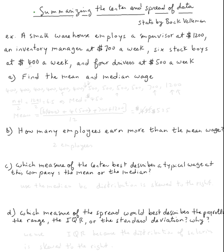For question a, we need to find the mean and median wage. First we start with the smallest numbers. We have six getting $400. You can use a calculator, but let's do it by hand. We have six at $400, four get paid $500 a week, then one at $700, and our last one at $1200. So these are all the numbers we have.